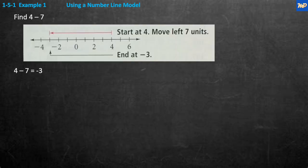Example 1, using a number line model. Find 4 minus 7. We draw a number line, mark 4, and since we're subtracting — going negative — we go to the left. When adding, you go to the right. We go 7 places to the left: 1, 2, 3, 4, 5, 6, 7. We end up at negative 3. So 4 minus 7 equals negative 3, or equivalently, 4 plus negative 7.